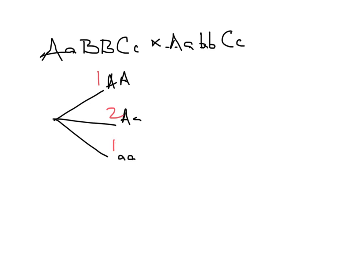As far as B is concerned, one parent gives us a big B allele and the other parent gives us a little b allele, no matter what. So every single progeny organism is going to be big B little b — heterozygous for B. There's no branching; they're all the same. So we can just draw those without branching.